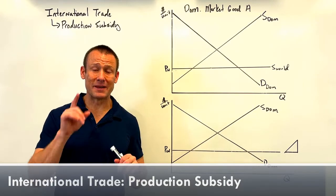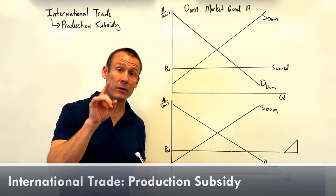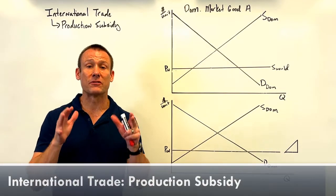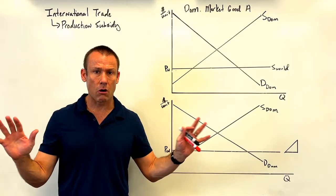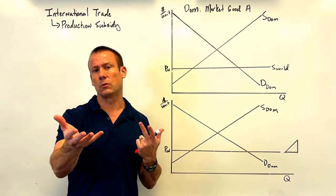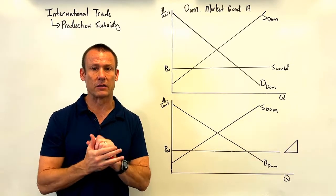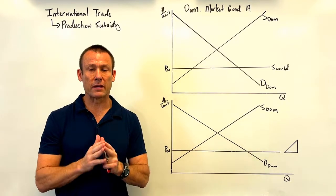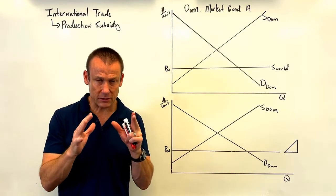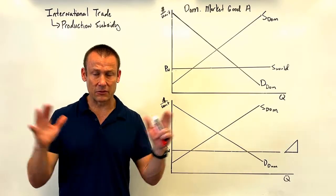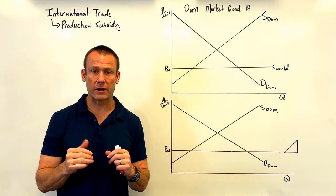In this video we're looking at a production subsidy through the lens of international trade. What we are not doing is looking at a production subsidy under the lens of microeconomics. In microeconomics, we basically ignore all international actors — we're just looking at a domestic market. Here, we're opening up the economy to international actors and implementing a production subsidy for a country that is a net importer.